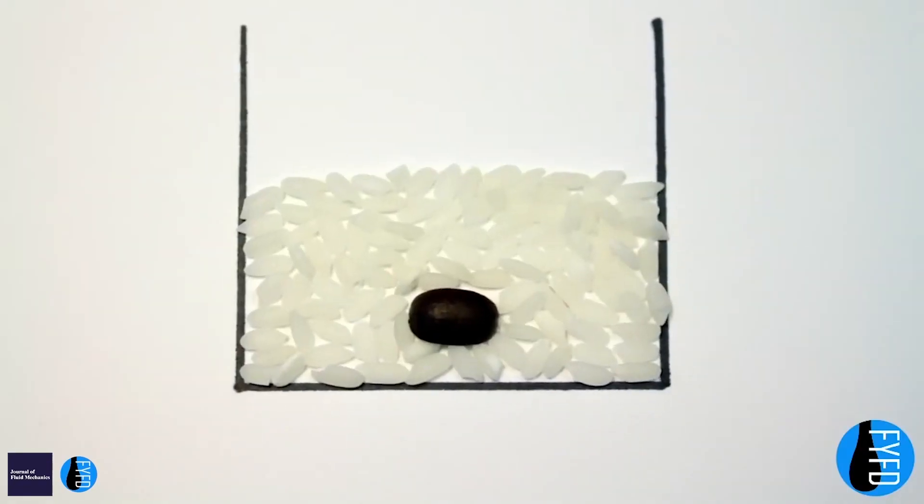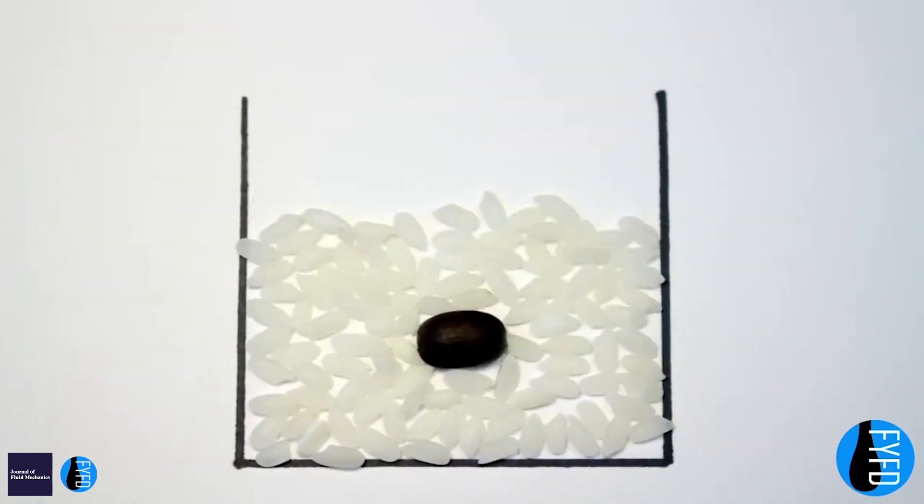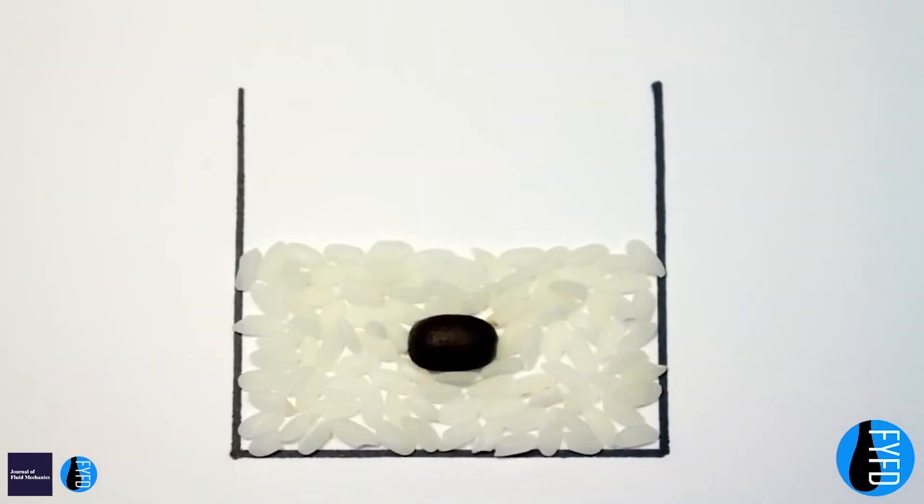You can demonstrate segregation at home if you take a jar of sand, put a marble inside it, and shake it. You can see that the marble rises to the top.